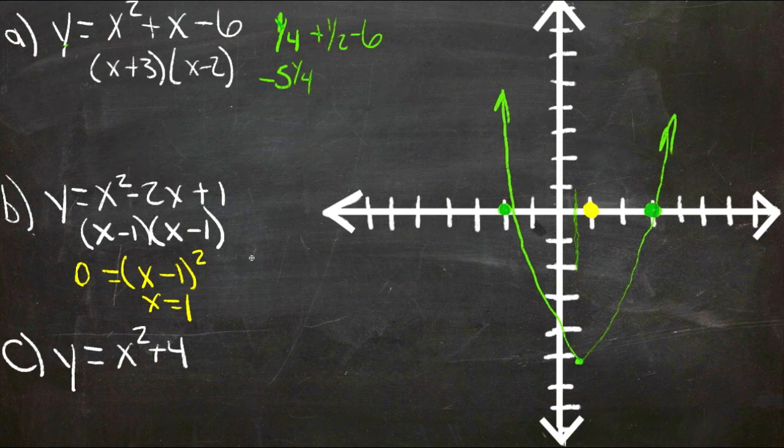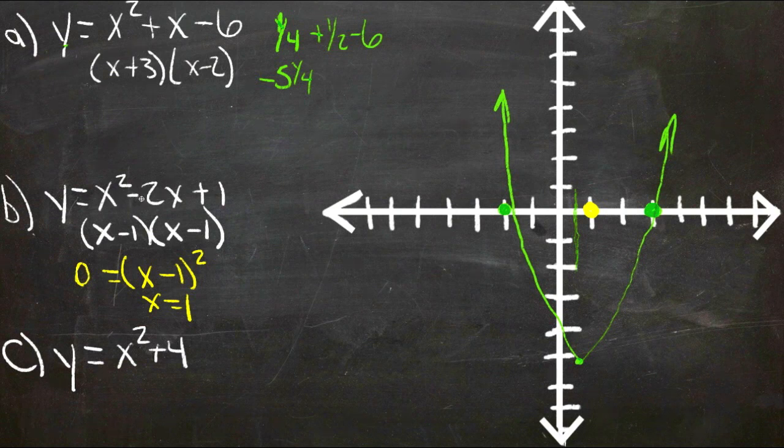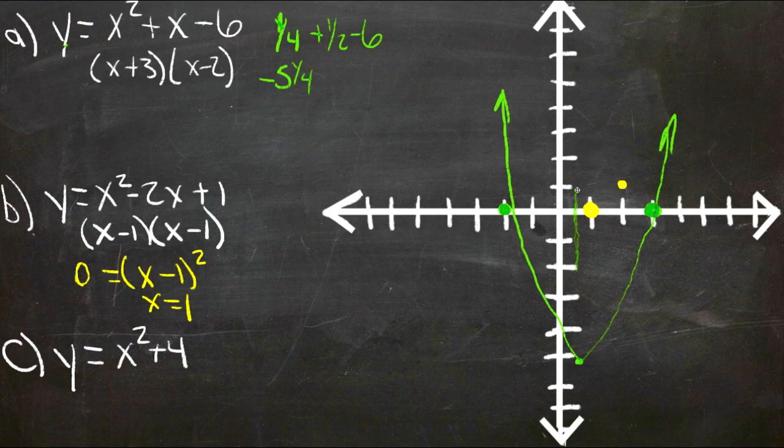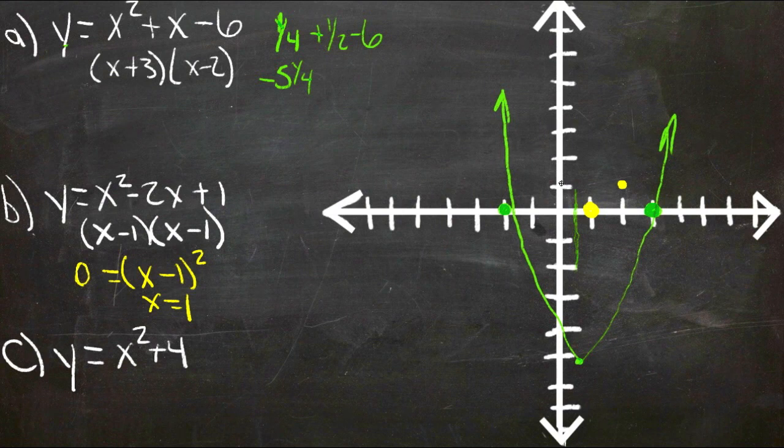And then if we plot just a couple of points, say 2. If x is 2, we get 4 minus 2 times 2, so negative 4, plus 1 is 1. So if x is 2, y is 1. And if x is 0, then y is also 1. So we have another point over here.